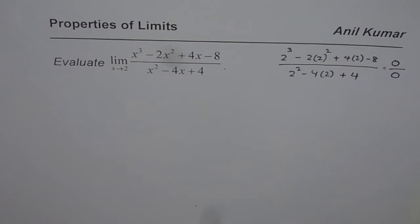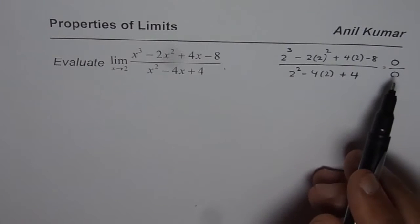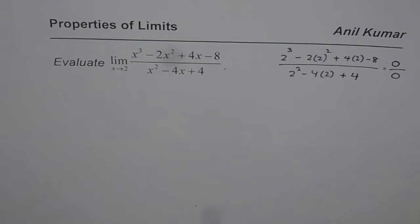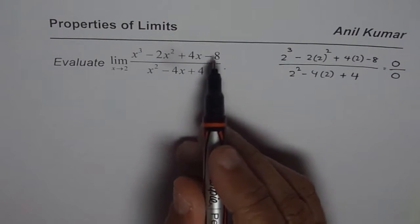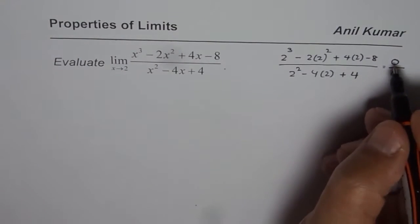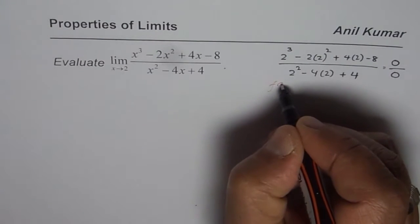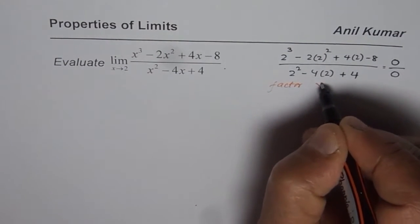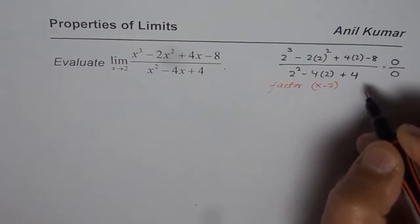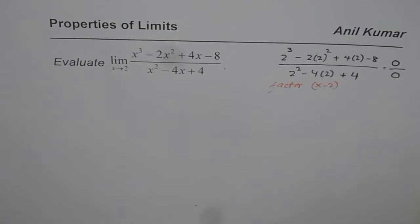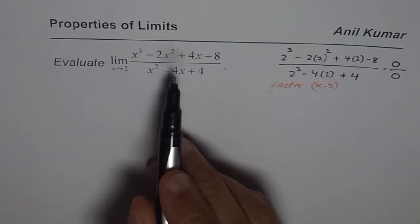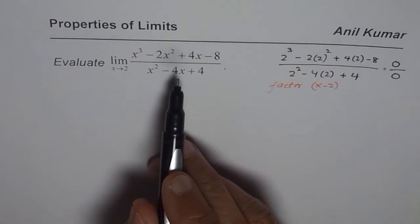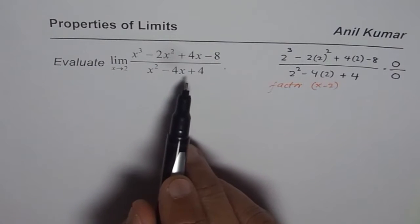So what we notice is that we have a 0 over 0 form. That is an indeterminate form, and it clearly indicates that we have a factor of (x minus 2) in both numerator and denominator. So the strategy to solve this question is to factorize the numerator and denominator, and then we can find the limit.